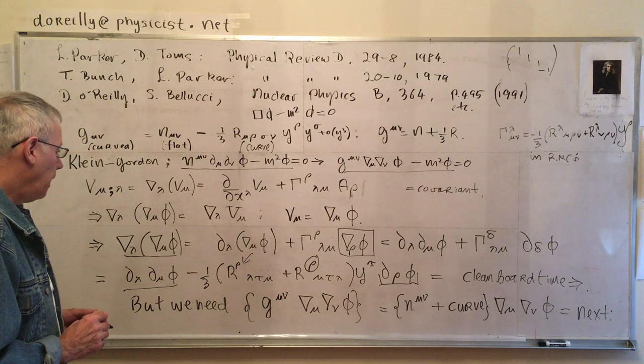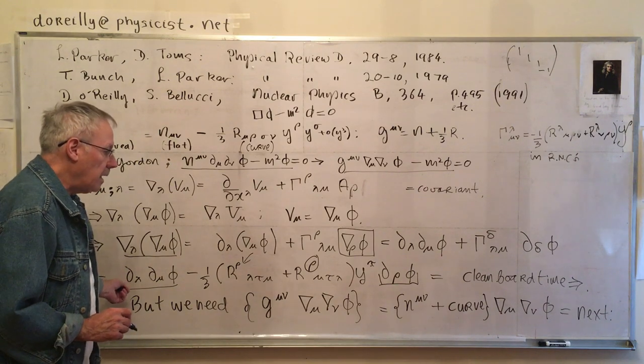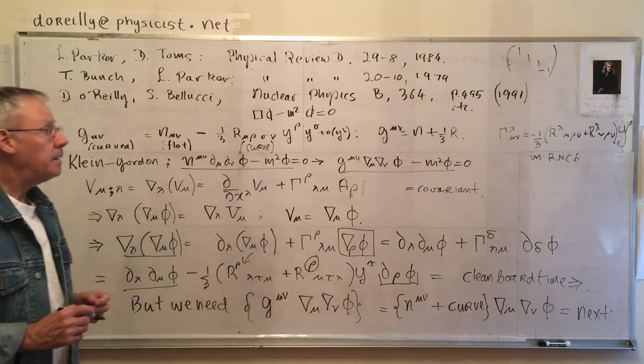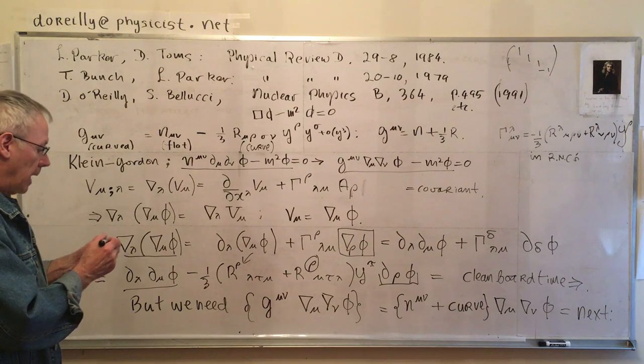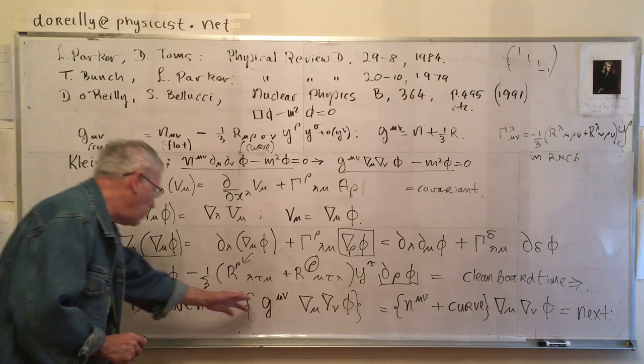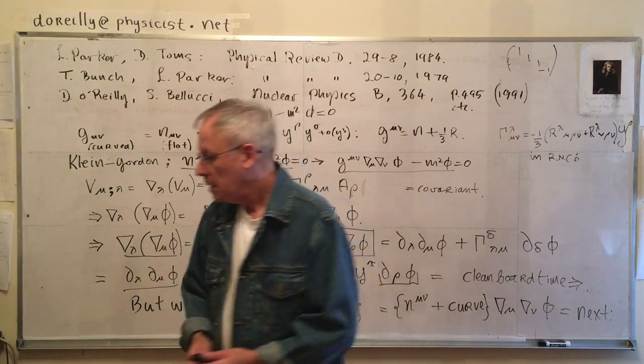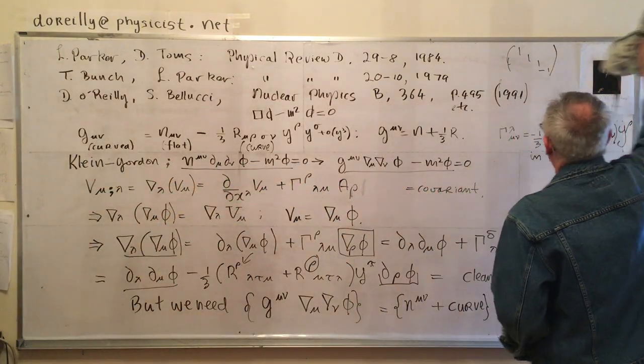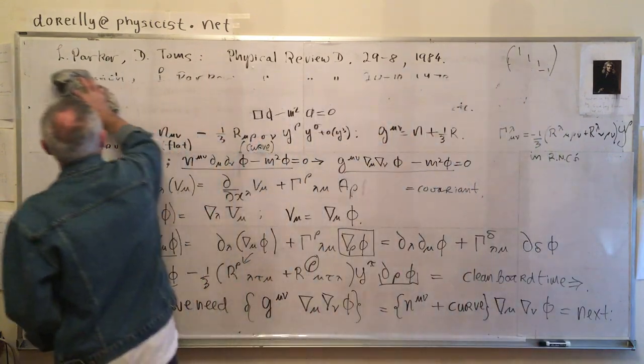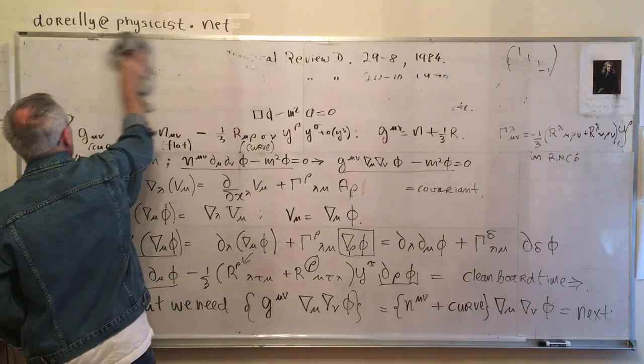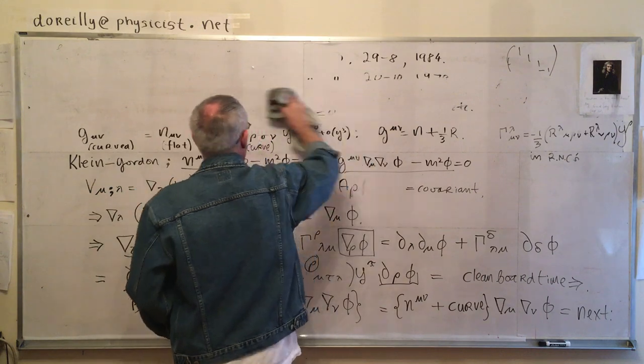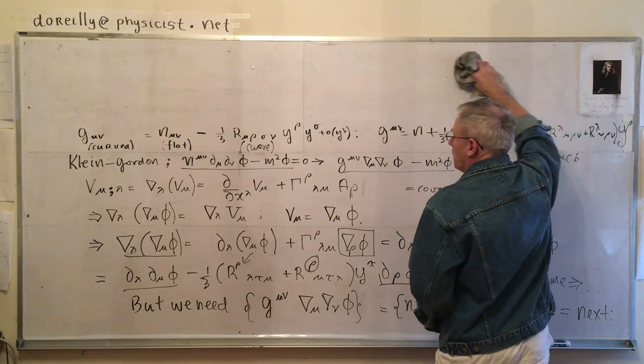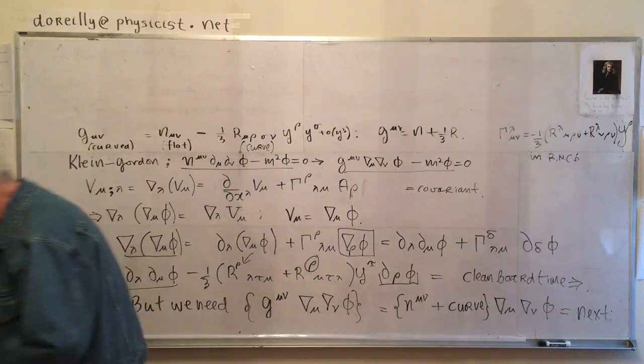This is only part of the calculation, because we need g mu nu times this whole object. Okay? So I have to do that. I have to do g mu nu times this, so it's only a straight multiplication. So let me show you that. Well, actually I've done it already, so I'm not going to do it by hand. Just write it out.